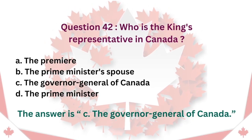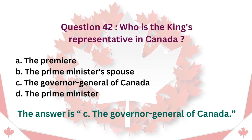Question 42: Who is the King's representative in Canada? A. The Premier. B. The Prime Minister's spouse. C. The Governor-General of Canada. D. The Prime Minister. The answer is C. The Governor-General of Canada.